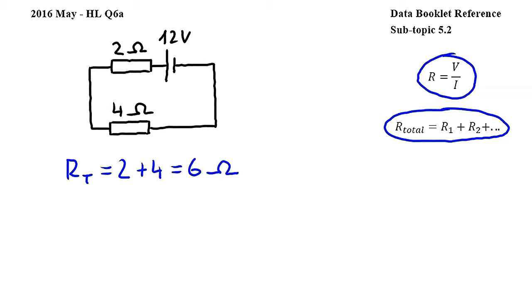Next, I will use this equation, also from subtopic 5.2, where R is resistance, V is potential difference, and I is current, to calculate the current in this circuit. Rearranging for I, we get I is equal to V over R, and substituting, we will use the EMF of the cell in this circuit, so 12 volts, divided by the total resistance, which is 6 ohms. This is equal to 2 amperes.